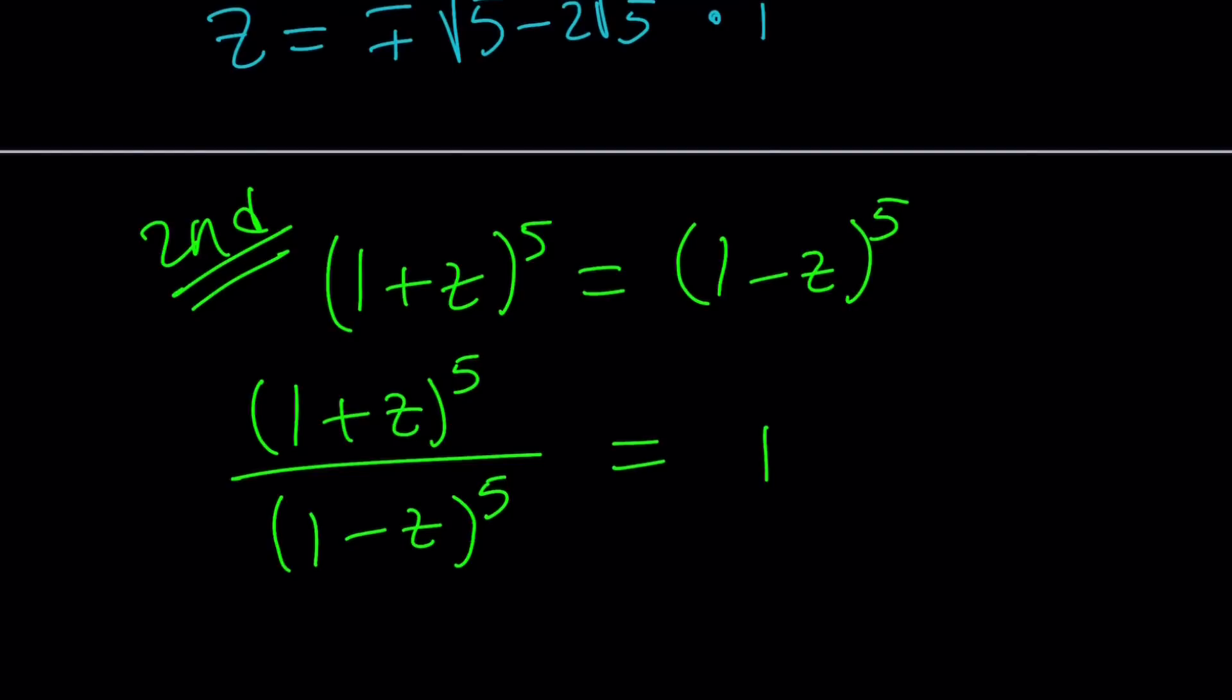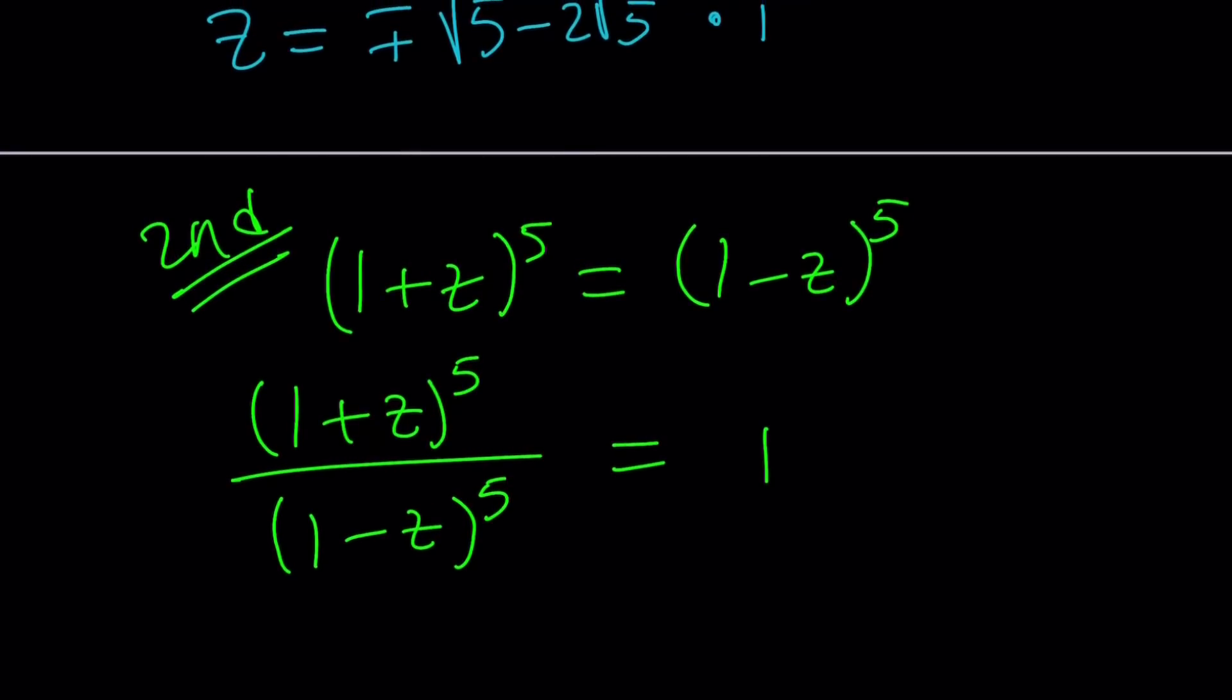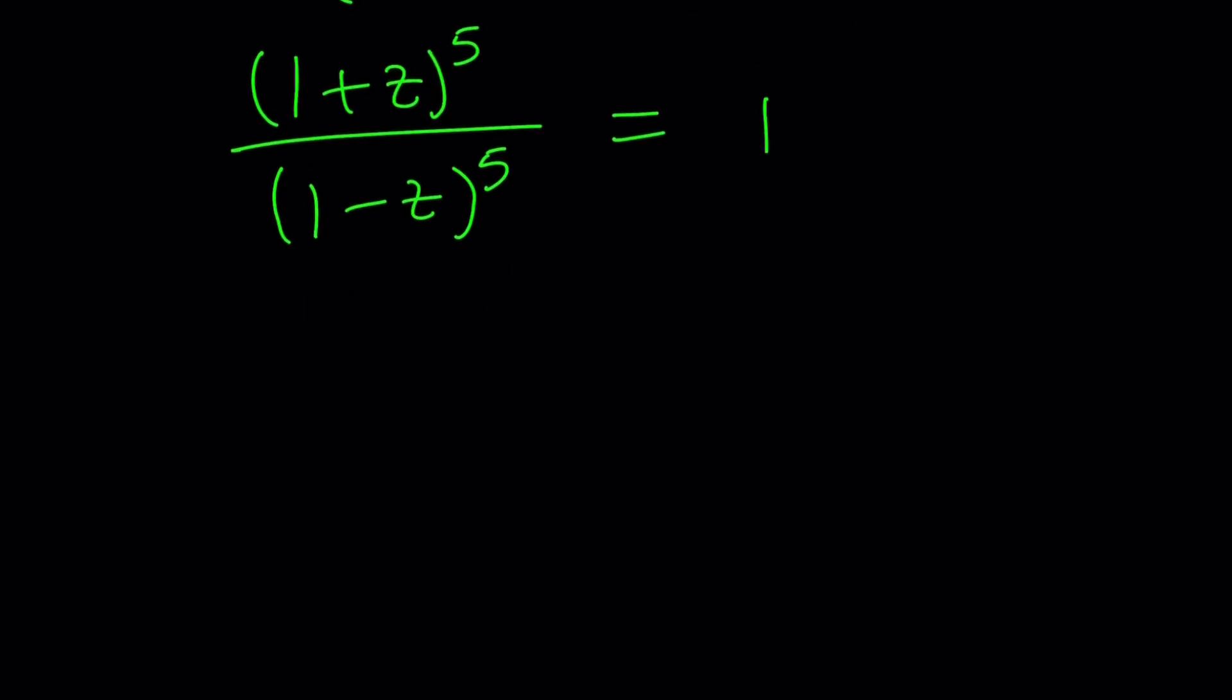And this is not going to be 0 because, obviously, z=1 does not satisfy this equation. So we're allowed to divide by this. But one thing that's really good about it is they're both 5th powers. So we kind of put them under the same power and then set equal to 1.